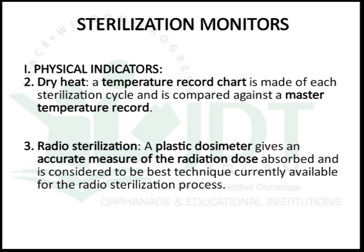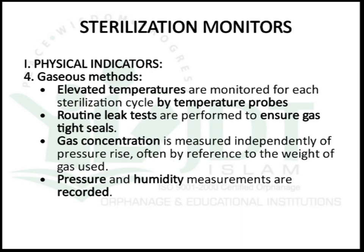For physical indicators in radiation sterilization, a plastic dosimeter is used, which gives an accurate measure of radiation dose absorbed. This is considered the best technique currently available for the radiation sterilization process.